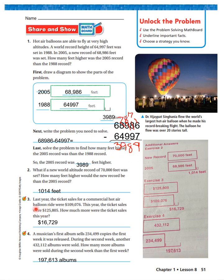Let's look at number three. Last year, the ticket sales for a commercial hot air balloon ride were $109,076. This year, the ticket sales were $125,805. How much more were the ticket sales this year? This year was $125,805 and last year was $109,076. If I subtract these two — because it wants to know how much more were the ticket sales this year — I get $16,729. Again, you did not see me write this out because I don't have room, but I expect to see this from you.